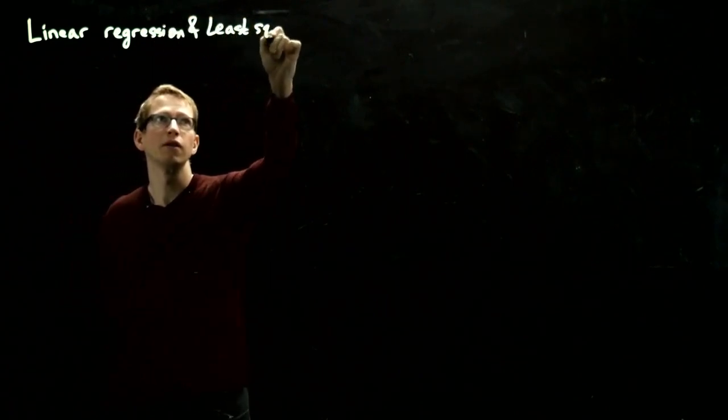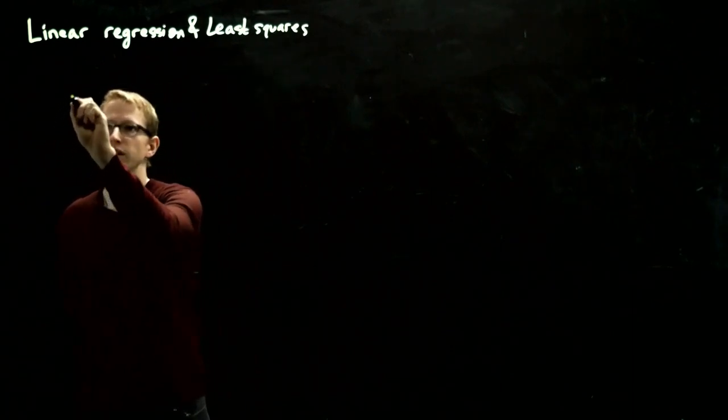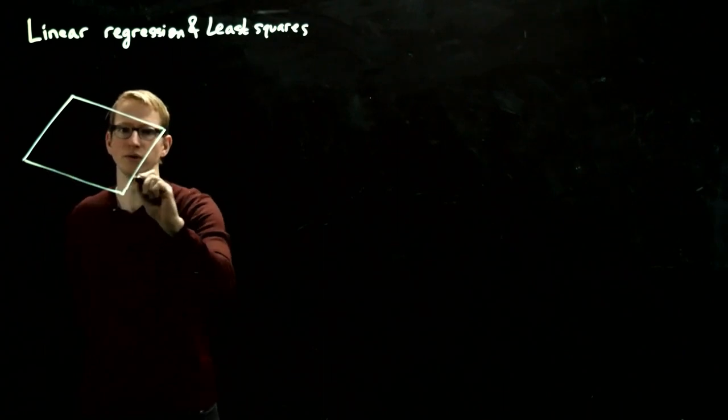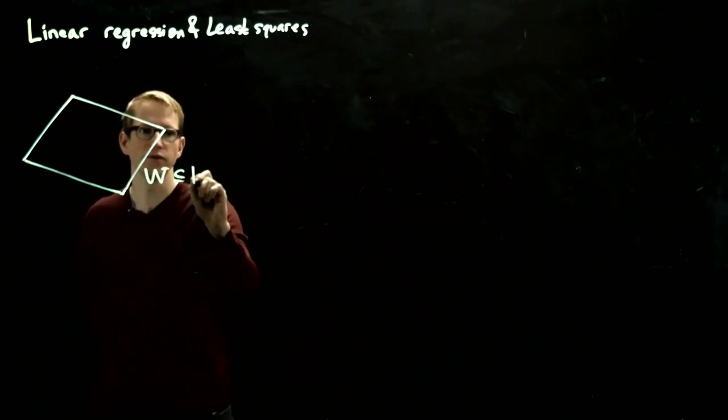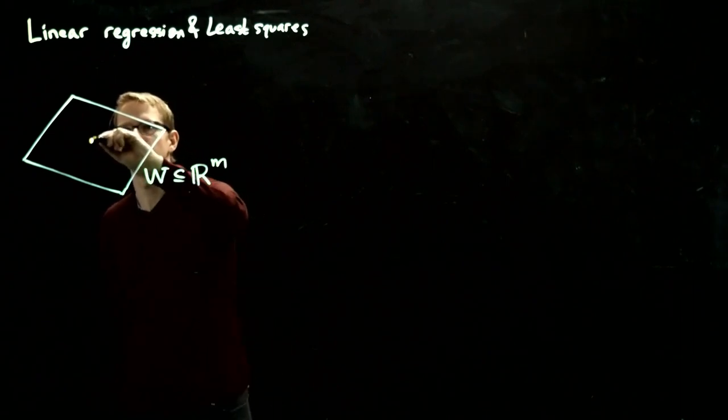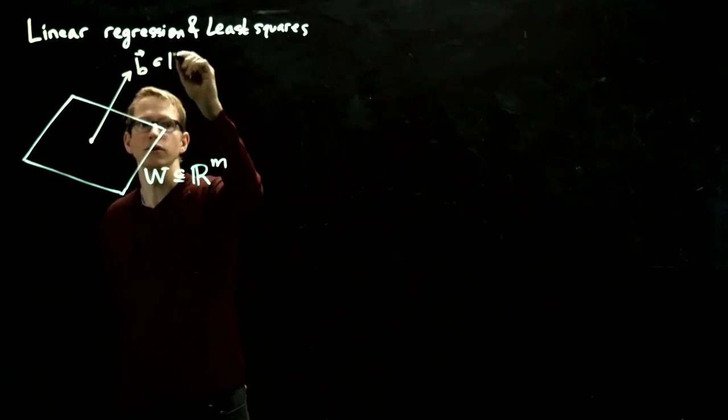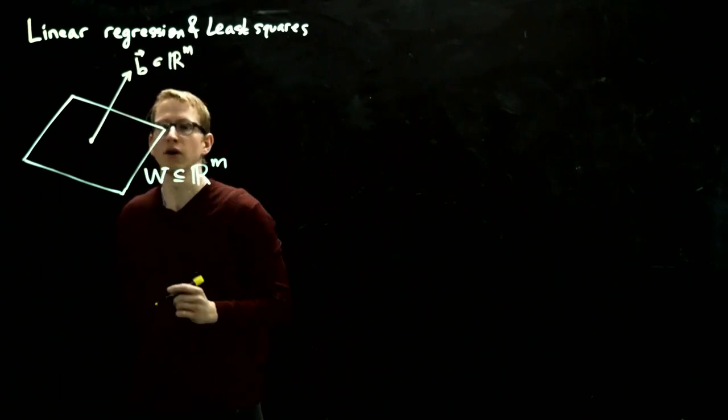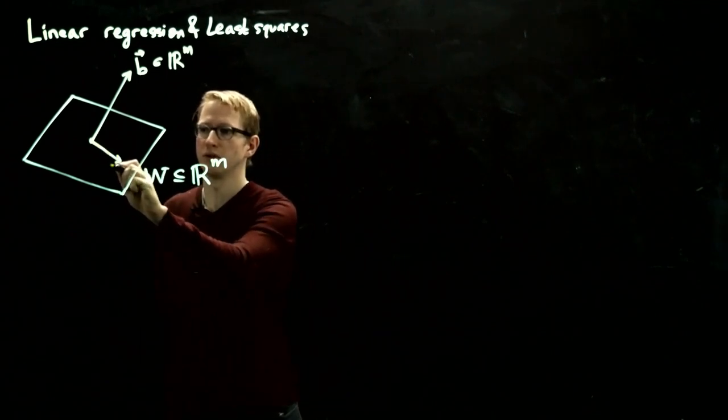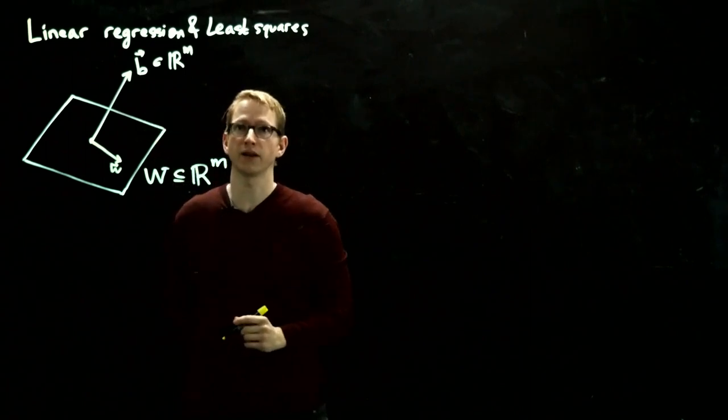The problem that we'll be solving is, first in the most abstract setting, if you're given a subspace W of R^m and a vector b also in R^m, the question that we want to solve is: which vector w in this subspace W is closest to the vector b?